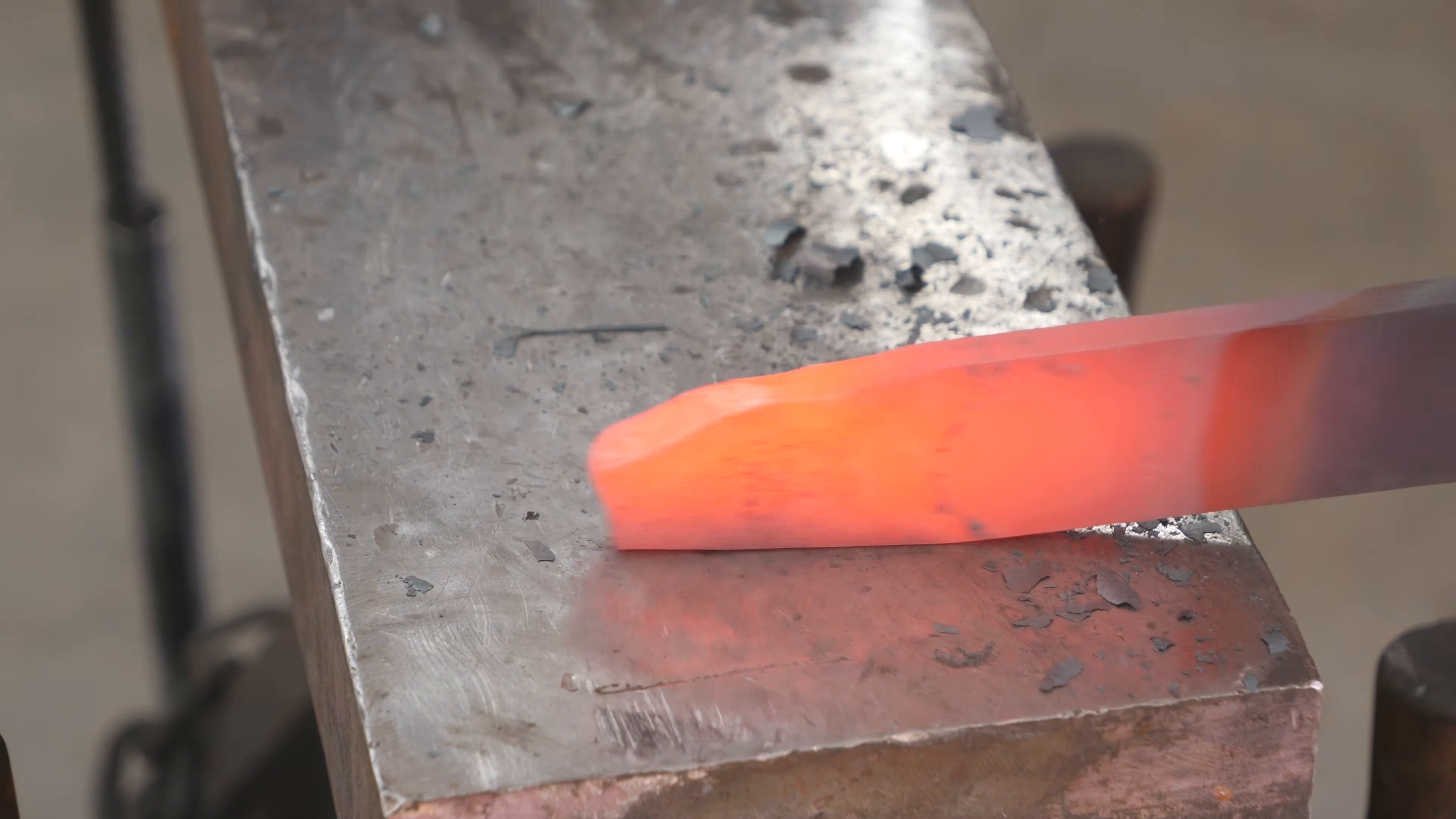Got the general blade shape forged out. I'm going to go ahead and cut off that bar stock and start working on the tang.